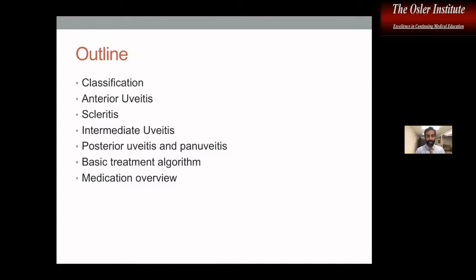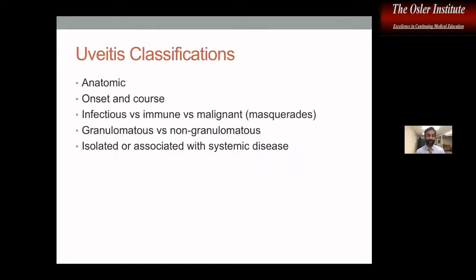No disclosures. The overall outline: we're going to do a little on classification and basics, then anterior uveitis, scleritis, intermediate uveitis. We spend a fair amount of time on posterior and pan uveitis, and talk about treatment algorithms and medications briefly at the end. I'm going to try to differentiate between what I think is clinically relevant and more testing relevant, because as you know, they're not always consistent.